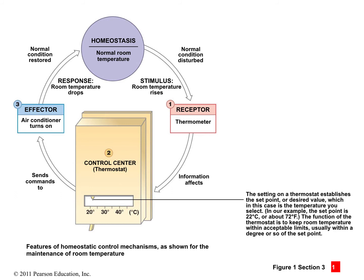The control center recognizes it's much too cold on the outside surface of the body and sends a signal back to the effector. The effector changes the condition at the original spot where the receptor was taking in information — it responds to commands opposing the original stimulus. In this temperature example, the effector would be the erector pili muscles in the skin.